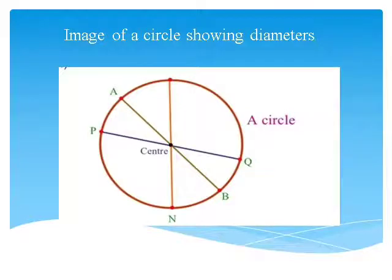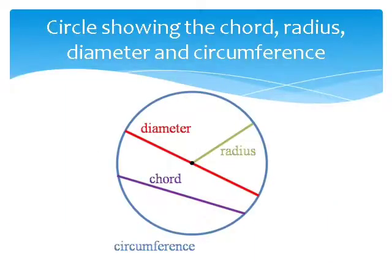Now here you can see a circle, which is showing the center, the radius, diameter, chord and the circumference.